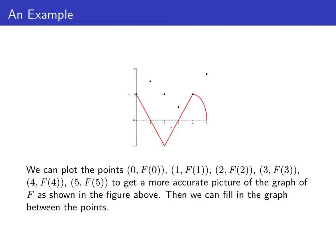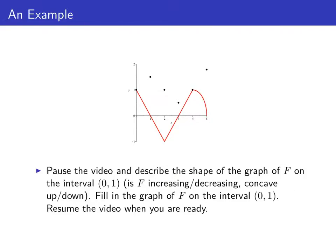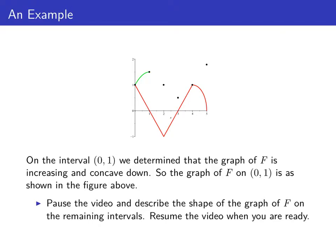Now we have specific points we can plot, and we can see the graph of big F taking shape. We just need to fill in the regions between these points to get an accurate graph. On the interval from 0 to 1, big F is increasing and concave down, so it looks like a concave-down arc connecting those two points. Pause the video to sketch that and then resume when you're ready.